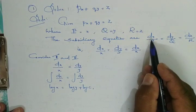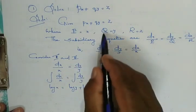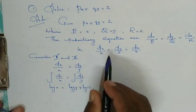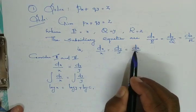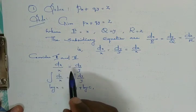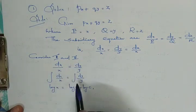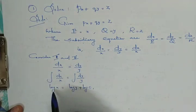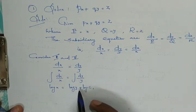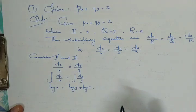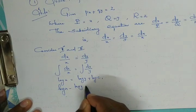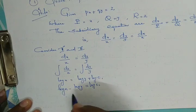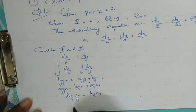We consider the first and second fractions: dx/x = dy/y. Integrating both sides, integration of 1/x gives log x and integration of 1/y gives log y. Adding the constant as log c₁, we get log x minus log y = log c₁. By the log rule log m minus log n = log(m/n), this becomes log(x/y) = log c₁. Cancelling log from both sides gives x/y = c₁.